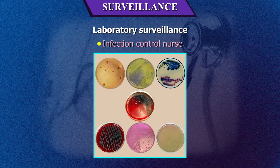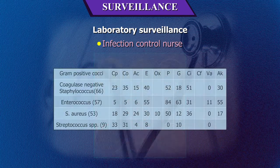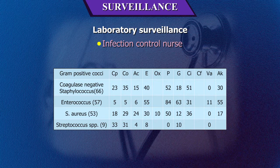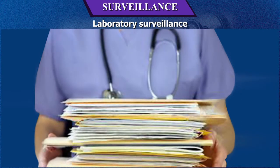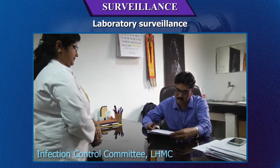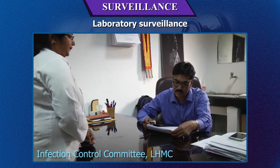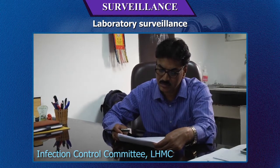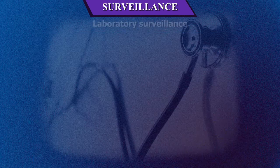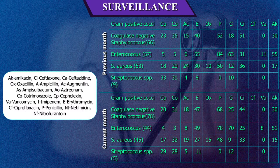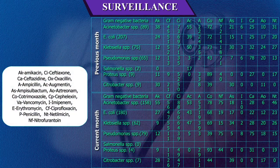Laboratory surveillance: The infection control nurse must check reports of culture isolates and antibiograms of specimens received from various vulnerable and high-risk areas in the microbiology laboratory daily. These cases should be followed up and data collected from the patient's medical chart and treating doctors to determine whether these are hospital-acquired infections. The infection control nurse must maintain records and submit reports to the infection control officer periodically. Examples include comparison of antibiotic-resistant patterns of gram-positive cocci and gram-negative bacteria over two months.